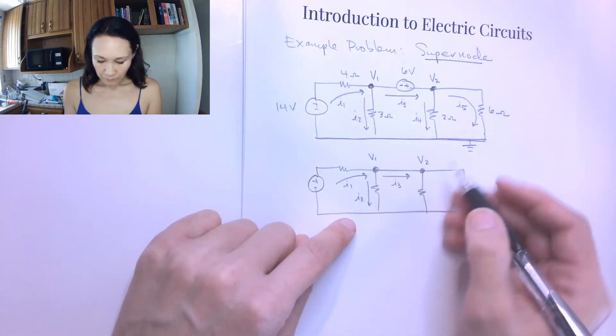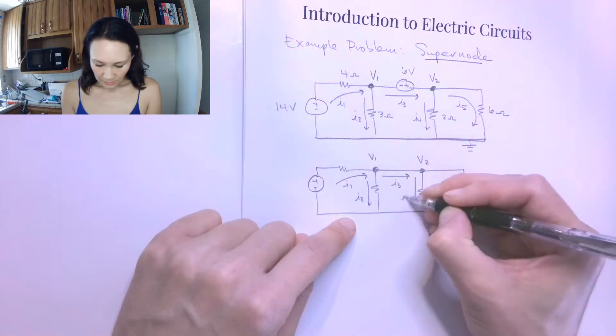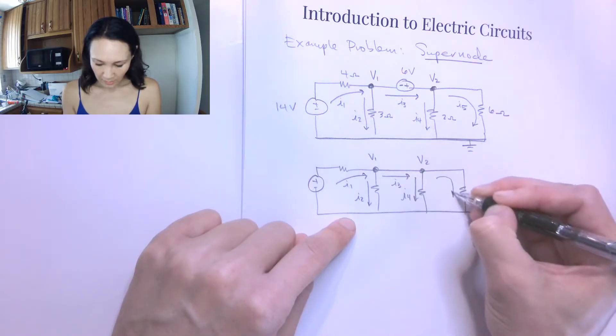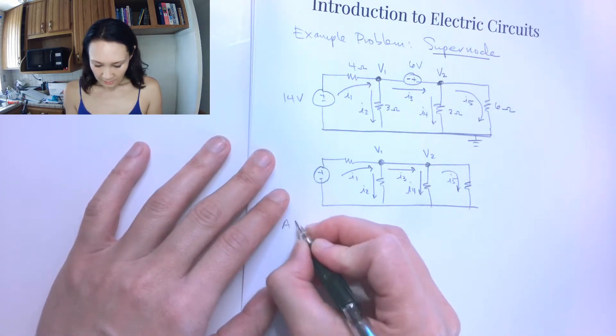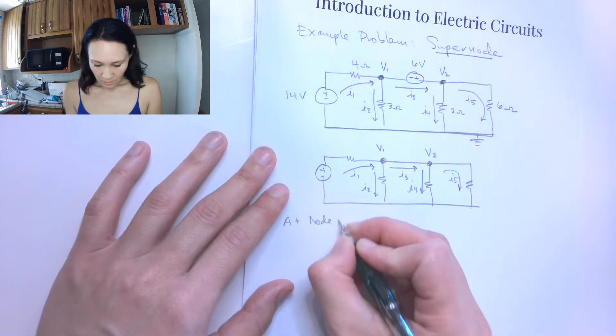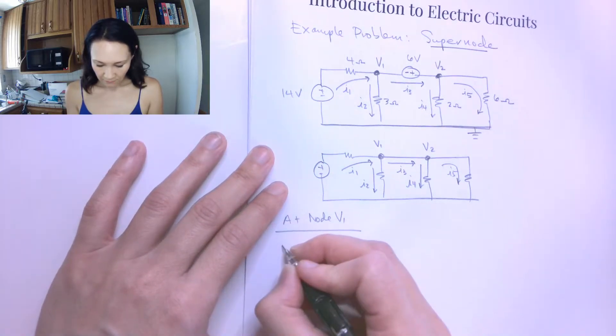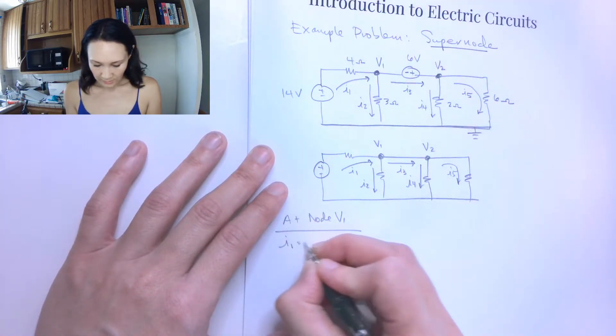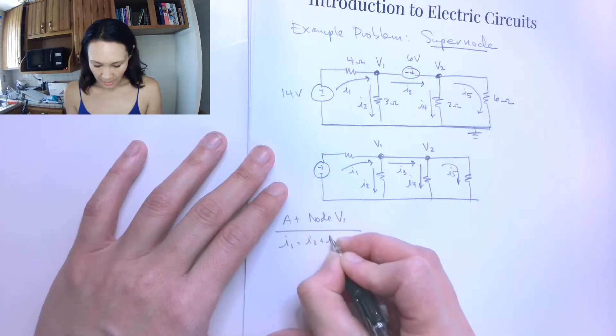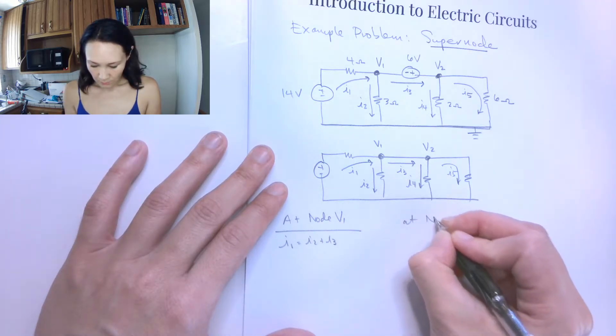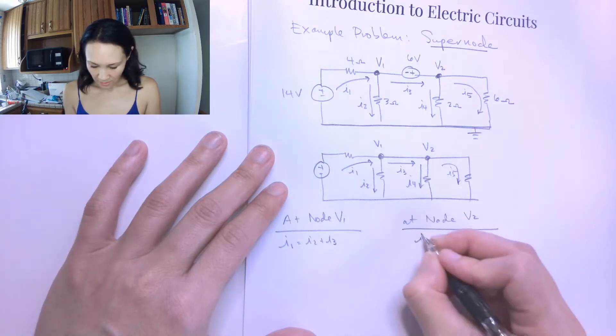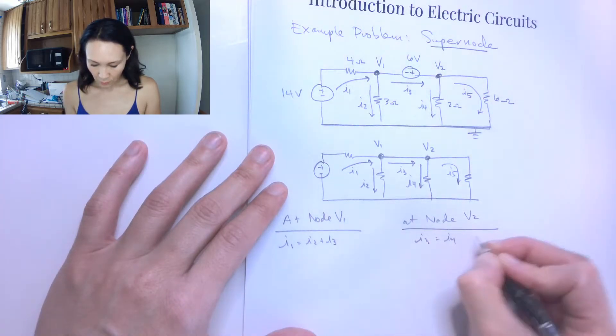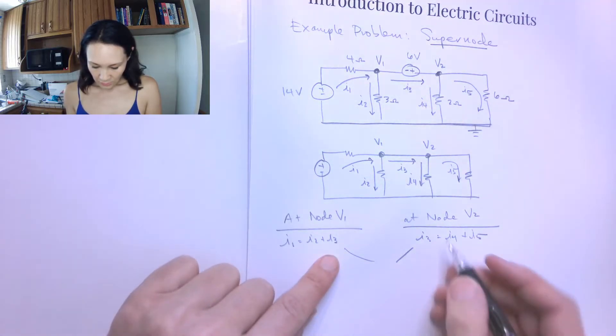But then this I3 is going to split down to be I4 and I5. So at node V1, I have that I1 is equal to I2 plus I3. And then at node V2, I have that I3 is equal to I4 plus I5.